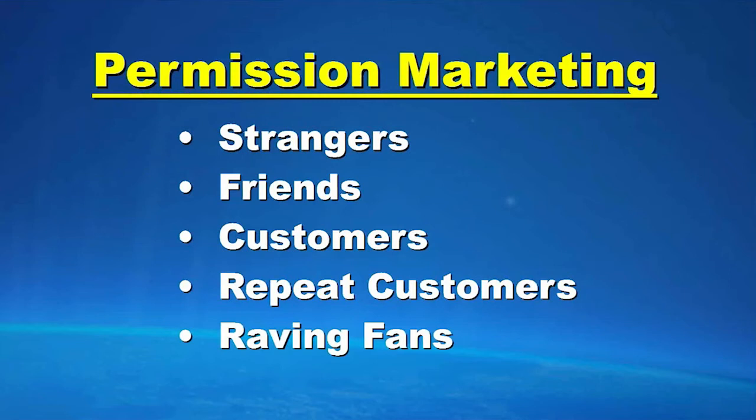Permission marketing follows a strategy. There's a gentleman called Seth Godin who wrote a book called Permission Marketing, and it has some great concepts. In this book, he talks about there being two kinds of advertising or marketing: there's what's called interruption marketing, and there's permission marketing.